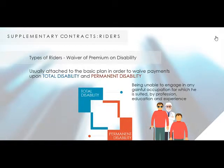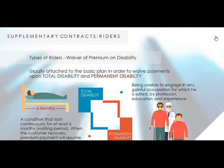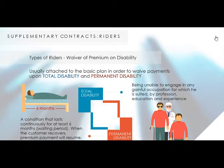Permanent disability is a condition that lasts continuously for at least six months. The six months is considered a waiting period. When the waiting period is over, all previous and successive premiums falling due will be waived until the disability persists. When the customer is able to recover, premium payment will resume. The company has the right to check the medical status of the customer.